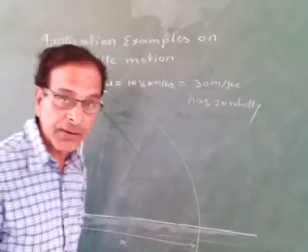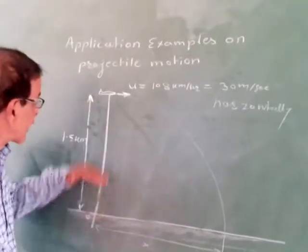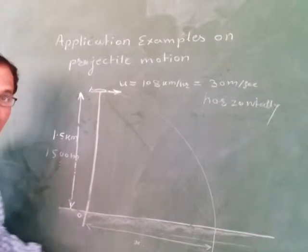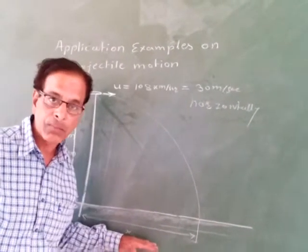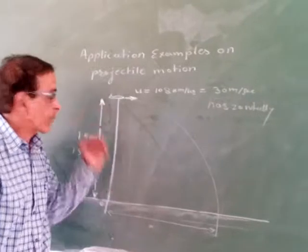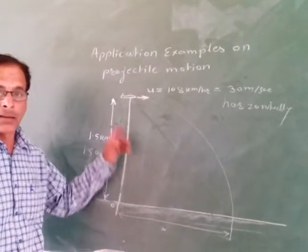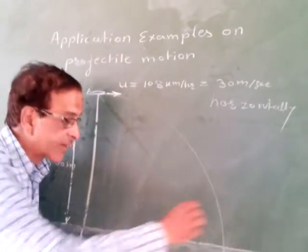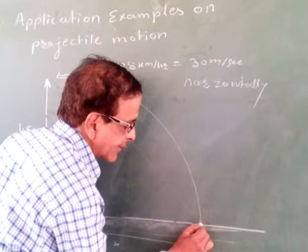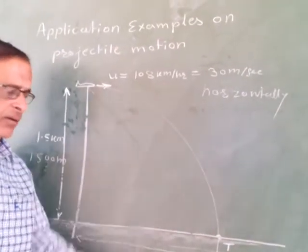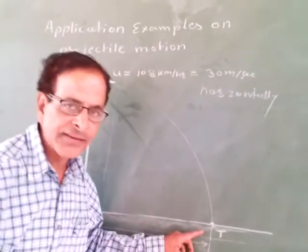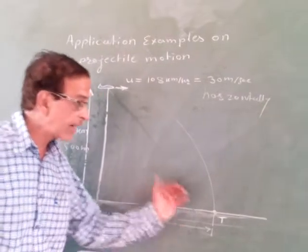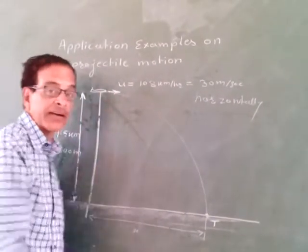The vital claim is moving horizontally at a height of 1.5 kilometers, which means 1500 meters from the ground. The pilot of this aircraft just glanced at the target on the ground, and as soon as he glanced the target, immediately he released the bomb.